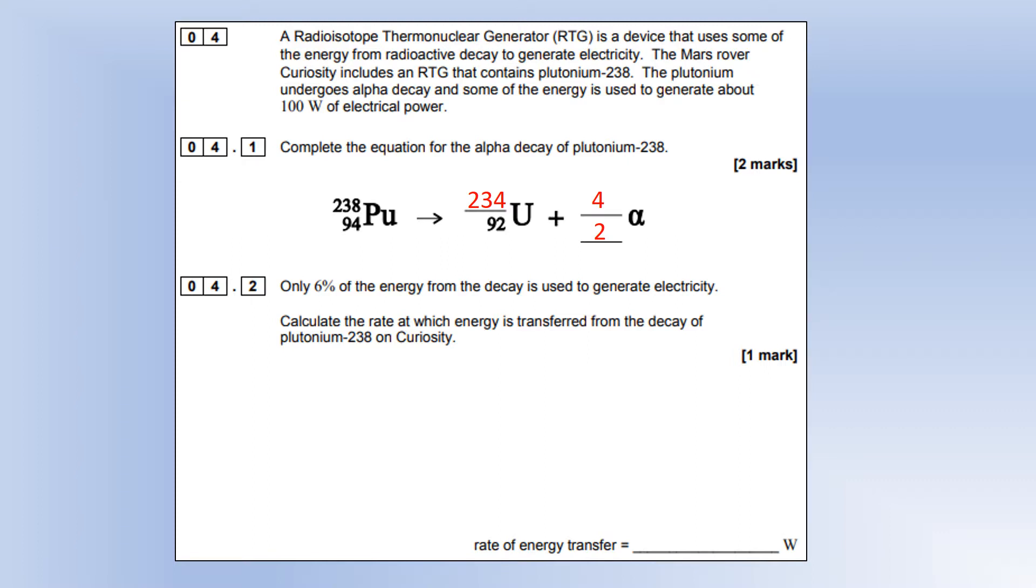Only six percent of the energy from the decay is used to generate electricity. Calculate the rate at which energy is transferred from decay. If 100 watts is six percent, dividing by 0.06 gives us the actual power from the decay: 1.7 × 10³ watts to two significant figures.